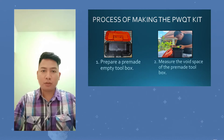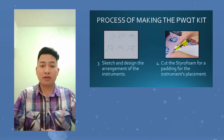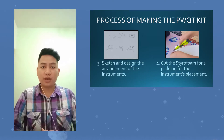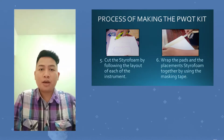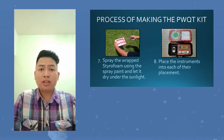The process for making the PWQT kit: prepare a toolbox and measure it. Design the arrangement and cut the styrofoam for padding, then cut the instruments layout and wrap it together using masking tape. Spray the styrofoam and let it dry, then put the instruments into each of their placements.